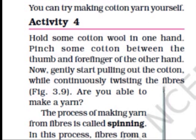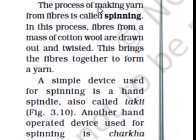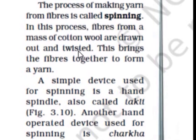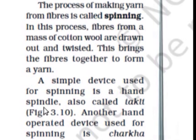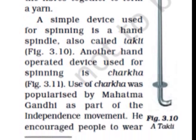Children, observe this picture. You have to hold cotton in your forefinger and thumb and start twisting to make a yarn. The process of making yarn from fibers is called spinning. In this process, fibers from a mass of cotton wool are drawn out and twisted together to form a yarn. A simple device used for spinning is a hand spindle. Another hand-operated device used for spinning is called a charkha.